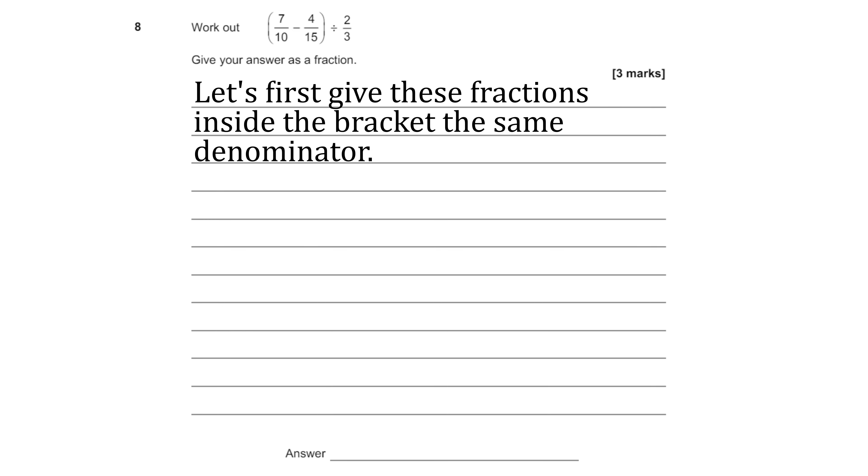So the first thing we're going to want to do is deal with the fractions inside the bracket. The problem is that they have different denominators and the denominator is the number on the bottom. So because they have different denominators we have to change that so they have the same one so we can subtract them from each other. So looking at the lowest common multiple it will probably be 30. So 10 and 15 if we times 10 by 3 and then 15 by 2 that will be 30. So we're going to give them both a denominator of 30.